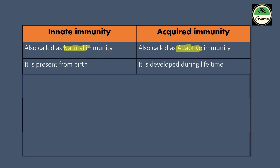The second difference: innate immunity is present from birth, whereas acquired immunity is developed during the lifetime.